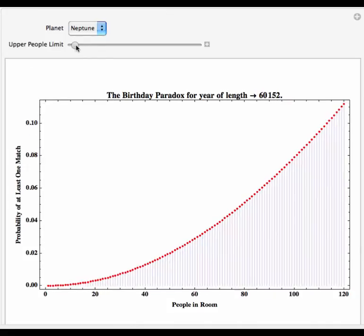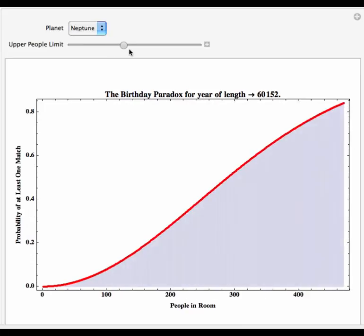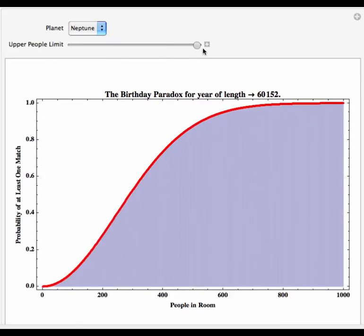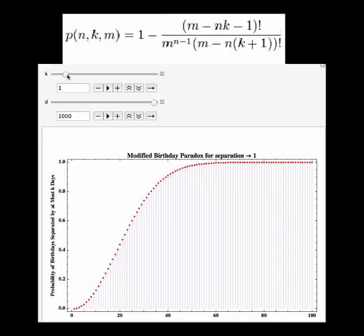Now we can change the upper limit of our people to see what this distribution looks like over a longer period of time. Now we're going to take a look at a variation on the original problem, where we compute the probability of a birthday match within k days.